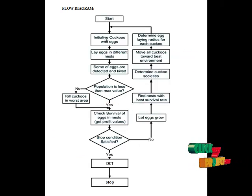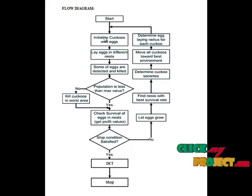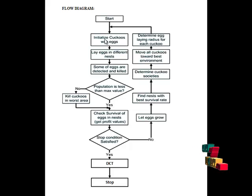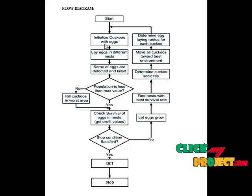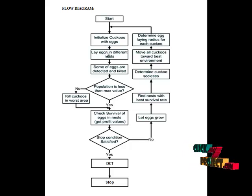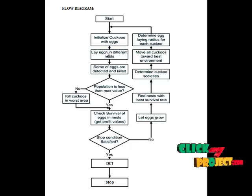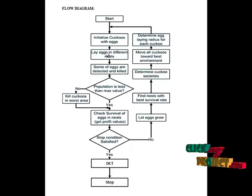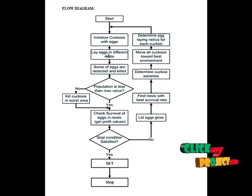This is the flow diagram of our project. In the first step, we initialize the cuckoos with their eggs. It lays the eggs in different nests. In that formation, it extracts regions in an image and provides an initialization of pixels, which represents the laying of eggs in the nest.